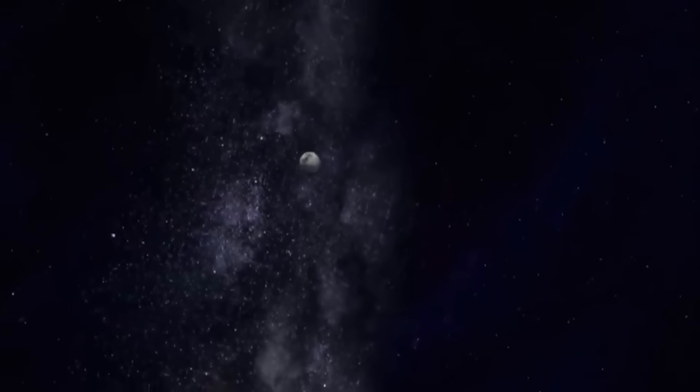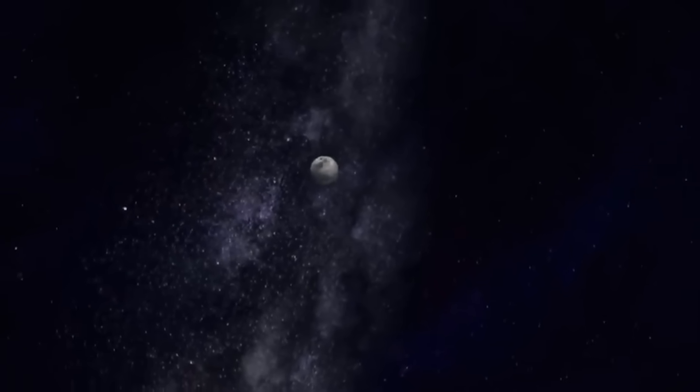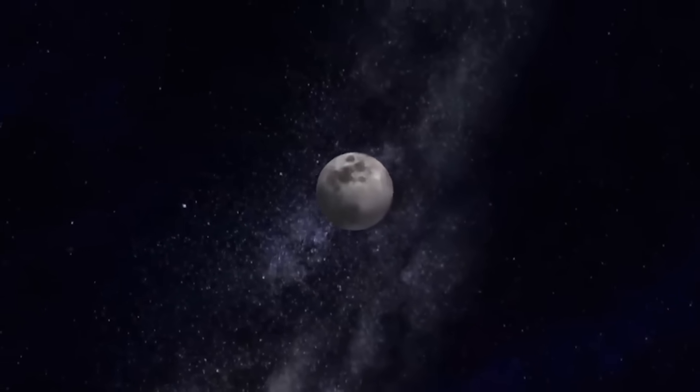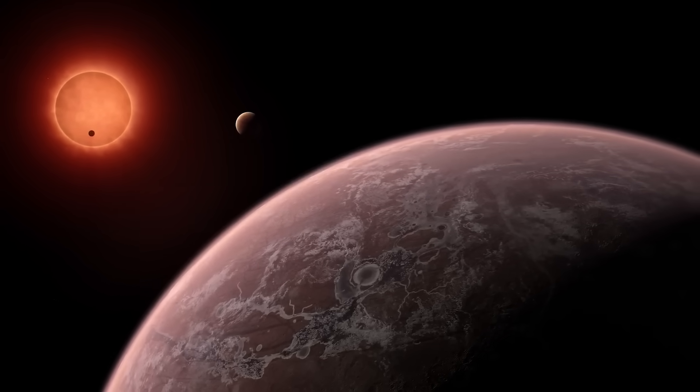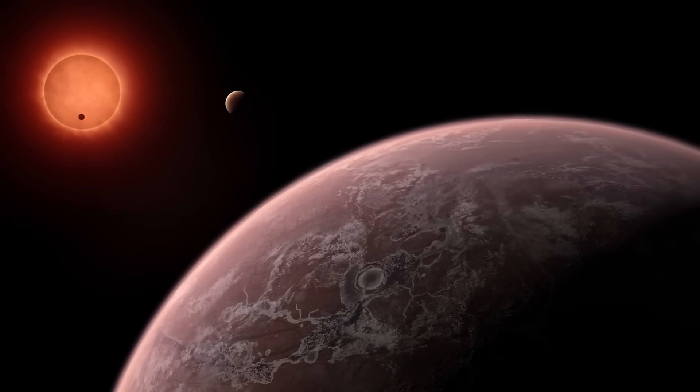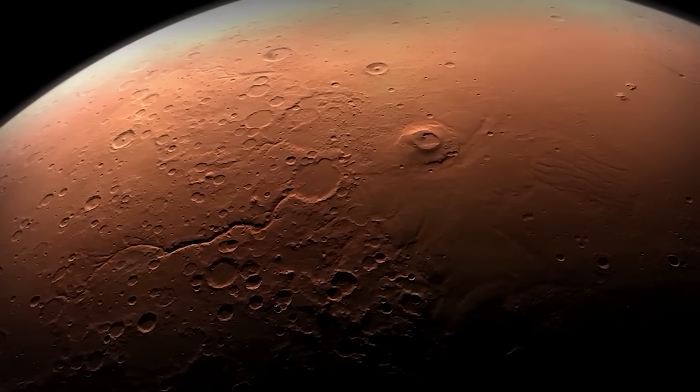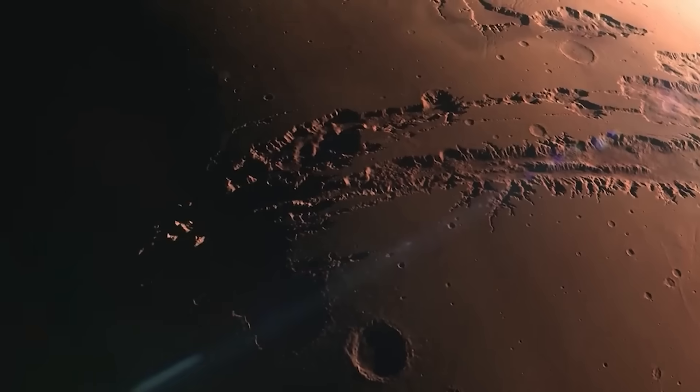Mars remained the silent witness. Its orbiters recorded plasma clouds, mapped chemical spikes, and strained to catch images of a nucleus that might now be changed forever. Each packet of data returned carried with it a reminder that this event was unfolding in real time, beyond Earth's ability to track. The red planet had become the eye of the solar system, holding its gaze on a traveler from the stars that had just revealed another layer of its mystery.